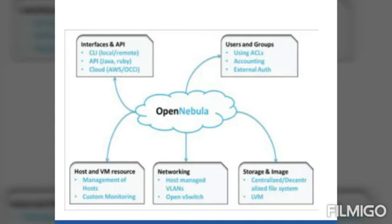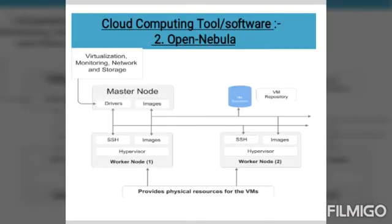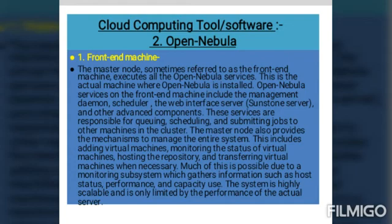The OpenNebula core can perform various operations and also supports the deployment of services. Virtual machines' placement decisions are taken by a separate scheduler component. It follows the rank scheduling policy, which places virtual machines on a physical host according to the rank given by the scheduler. These ranks are decided by the scheduler using a rank algorithm. OpenNebula uses cloud drivers to interact with external clouds and integrates the core with other software management tools via a management interface.